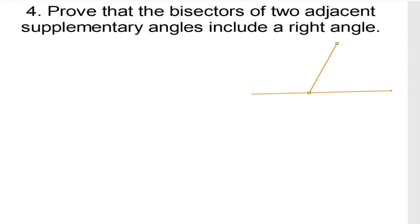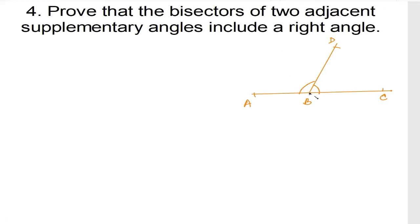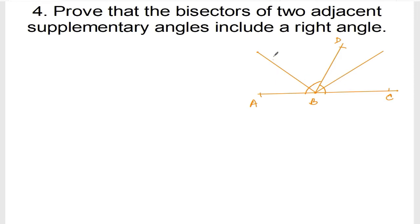Let us make it like this. So this one and this one. Let me name the points A, B, C, and D. Here A, C, and this is D. Now, prove that the bisector of two adjacent supplementary angles include a right angle. So I need to draw a bisector. Let me bisect this one — this is 50-50, right? I am bisecting this one. And I need to bisect even this angle. So this angle I have bisected and this one also I have bisected. Let me name them E here and F here.